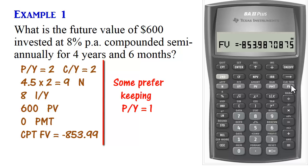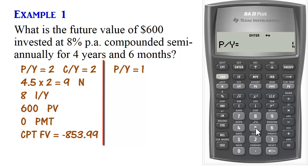Some people prefer to set P/Y to 1, so N could be the number of years. So in that case, you have something like this. Second P/Y. You set that to 1. Enter.